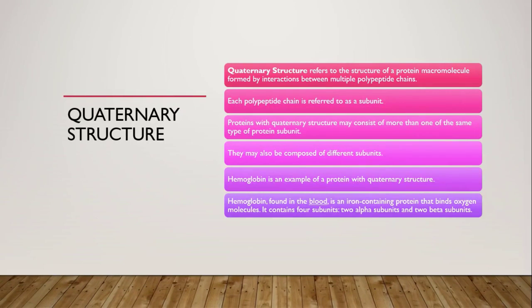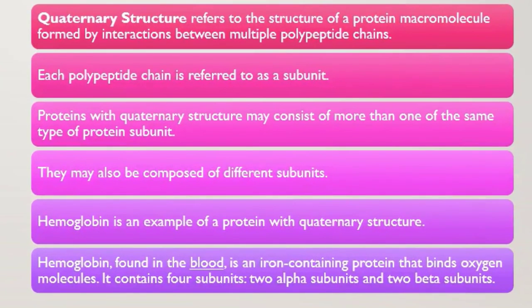Then we have the quaternary structure of proteins. When we have highly complex proteins made up of many polypeptide chains through aggregation, they give us a quaternary structure. These polypeptide chains are held together by hydrophobic interactions, hydrogen bonding, and ionic bonding. Every individual polypeptide chain in a quaternary structure is called a subunit, and these subunits can be the same or different.